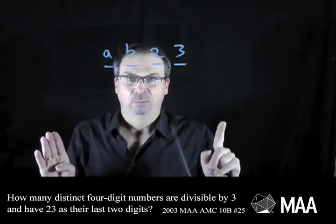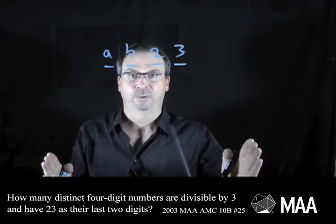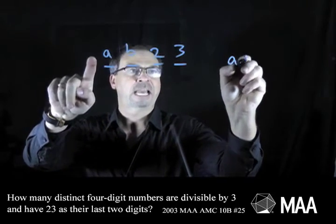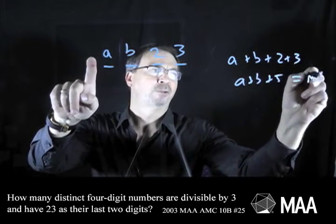I do happen to know a divisibility rule for the number three. A number is divisible by three if the sum of its digits is a multiple of three. In this case, the sum of the digits is a plus b plus two plus three. That is, a plus b plus five needs to be a multiple of three.